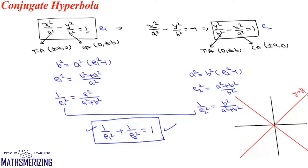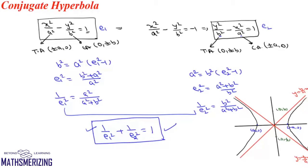The asymptotes are y = (b/a)x and y = -(b/a)x. We mark the four points: (a, 0), (-a, 0), (0, b), and (0, -b). The first hyperbola is x² / a² - y² / b² = 1, and the second (conjugate) hyperbola is drawn in green. These two hyperbolas are called conjugate hyperbolas of each other.